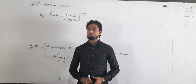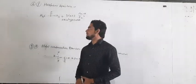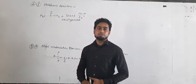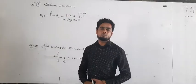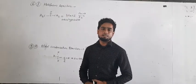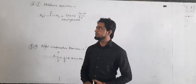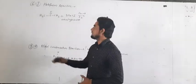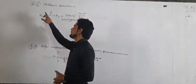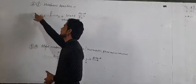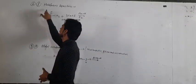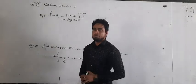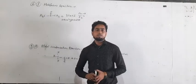Dear students, good morning to all of you. Today we will discuss the chemical properties of aldehydes and ketones. In this remaining point, we take point number 6 or F — what is the haloform reaction?